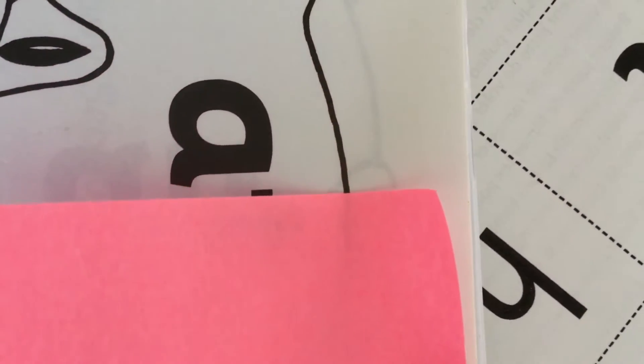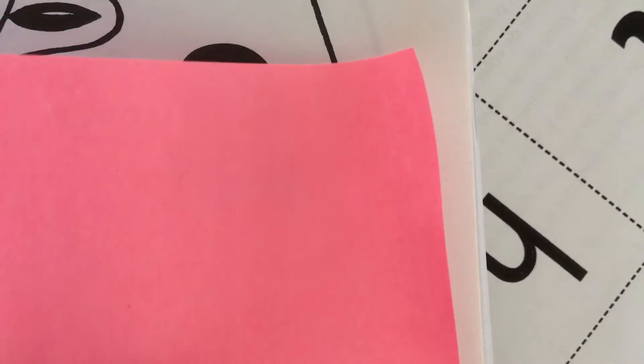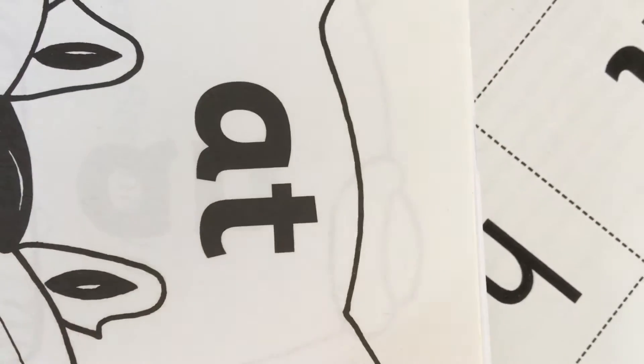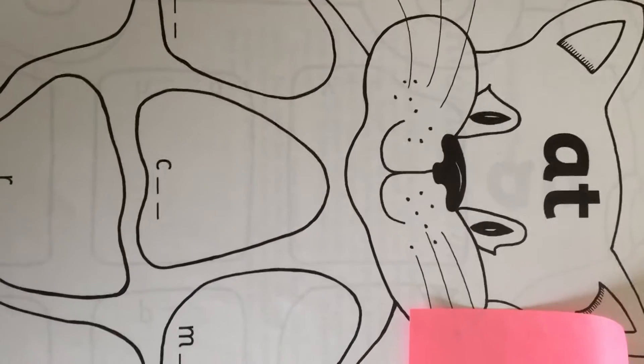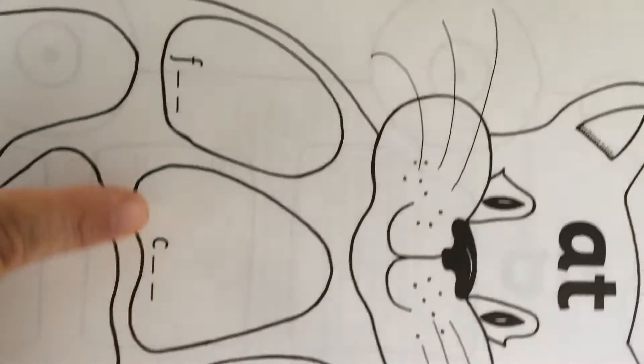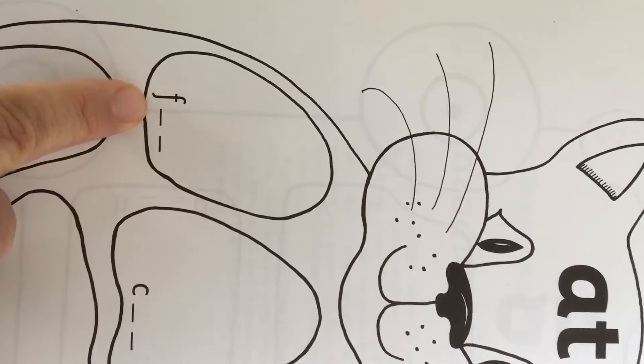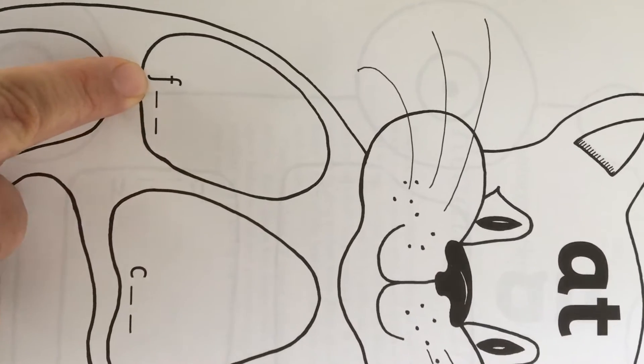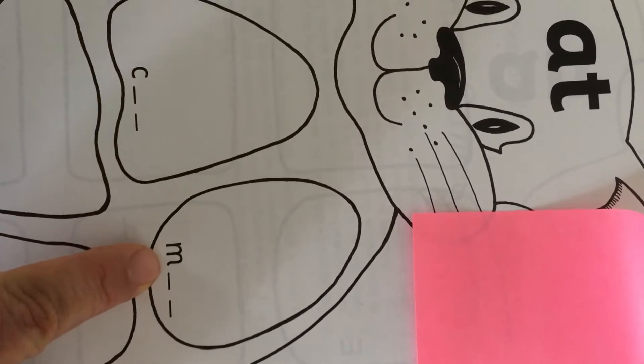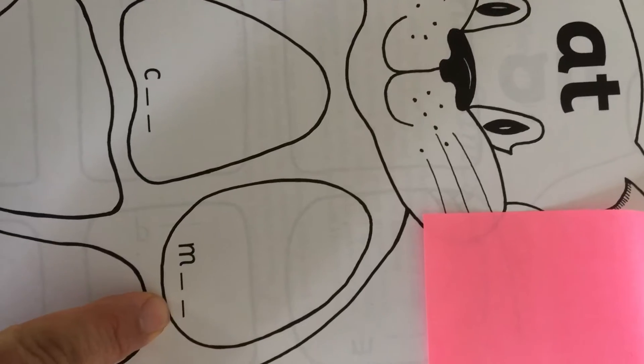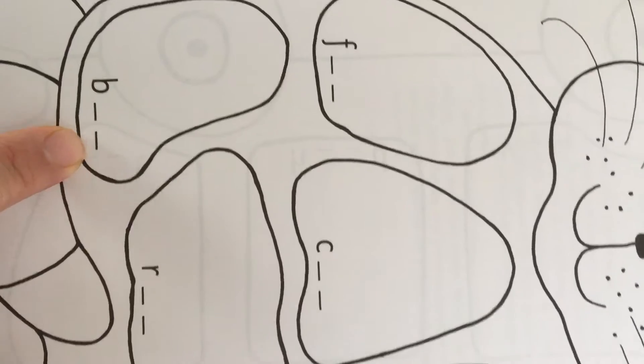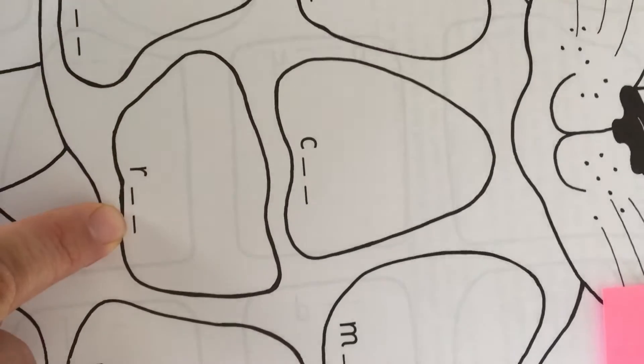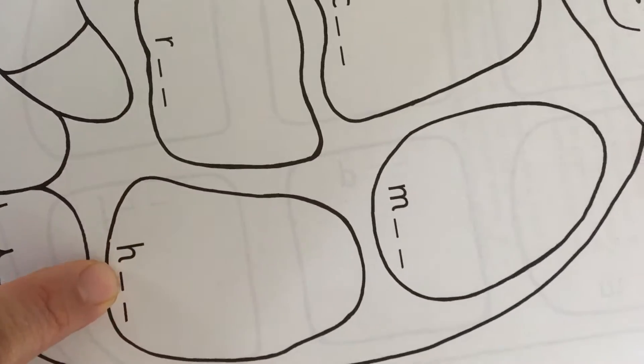At. At. That makes this sound 'at'. What can we do with the sound 'at'? We can make cat, fat—a fat cat. Mat. Bat. Rat. Hat.